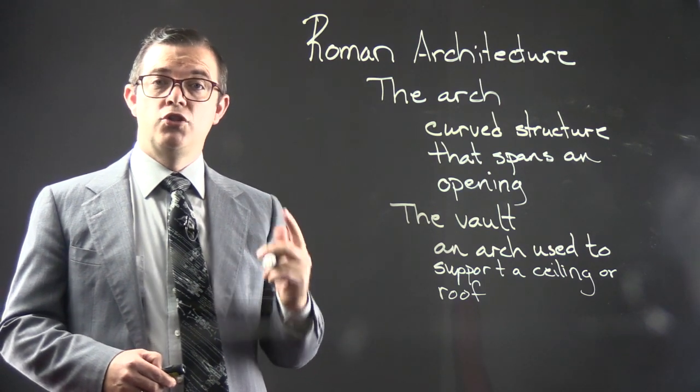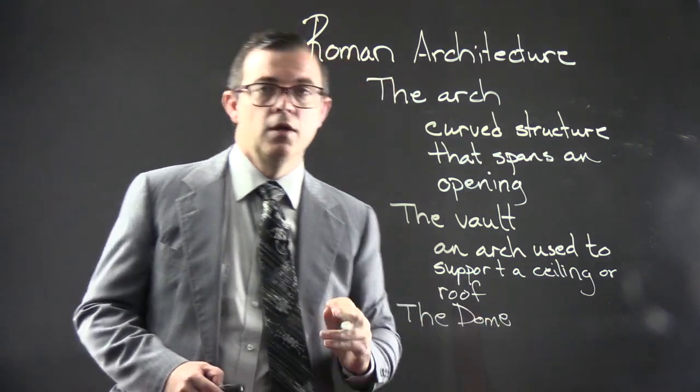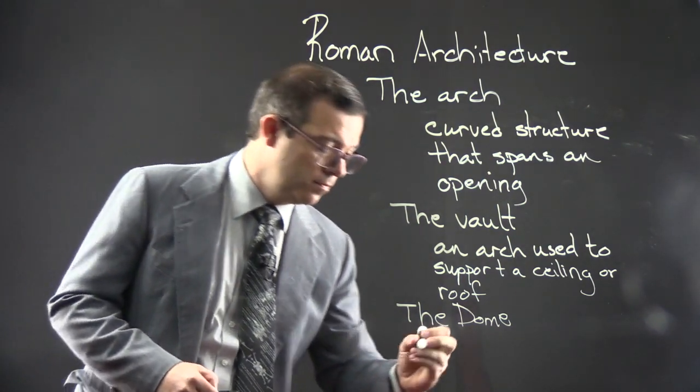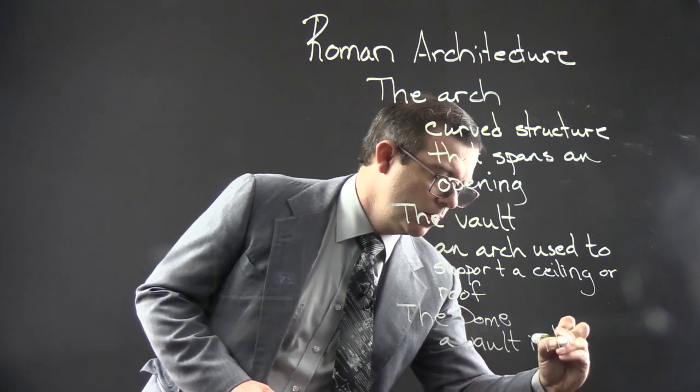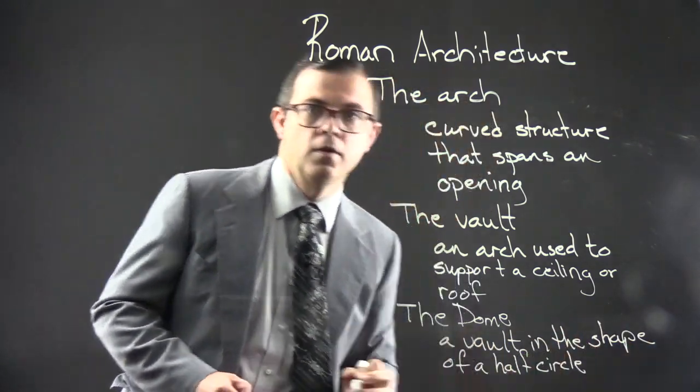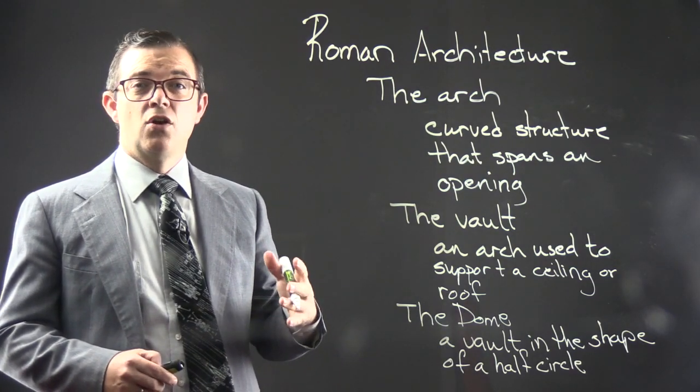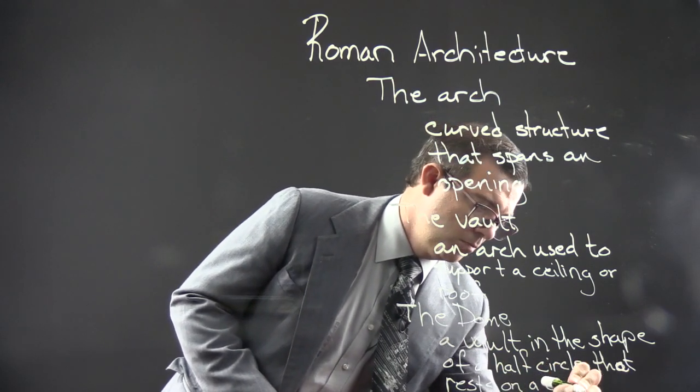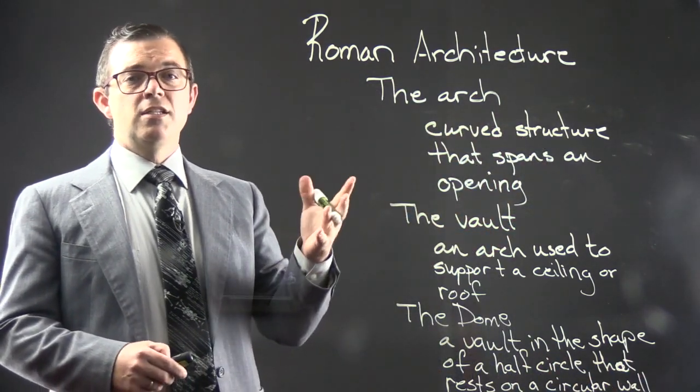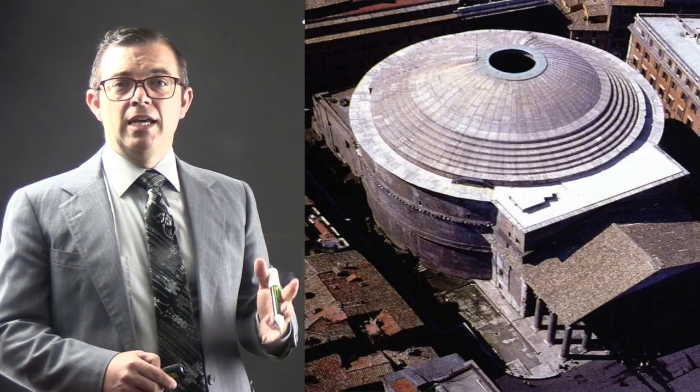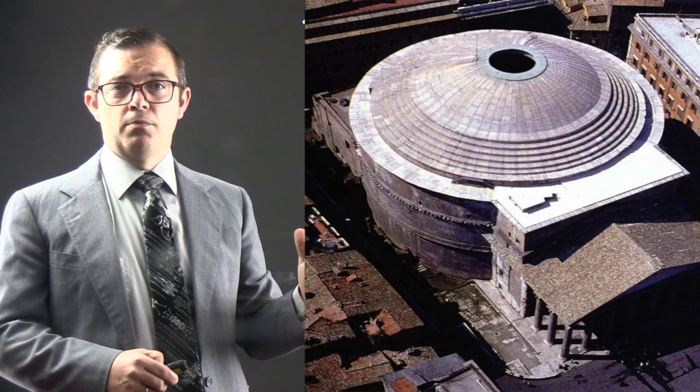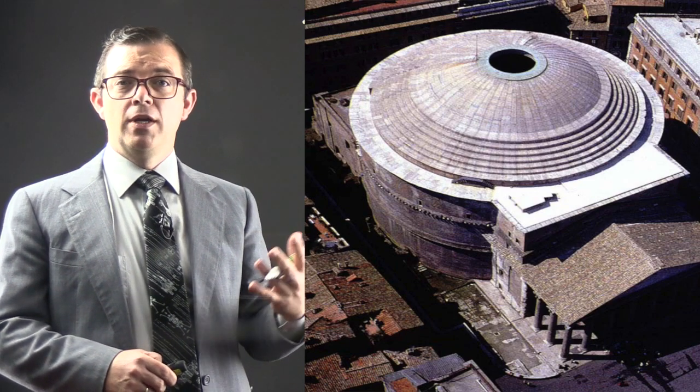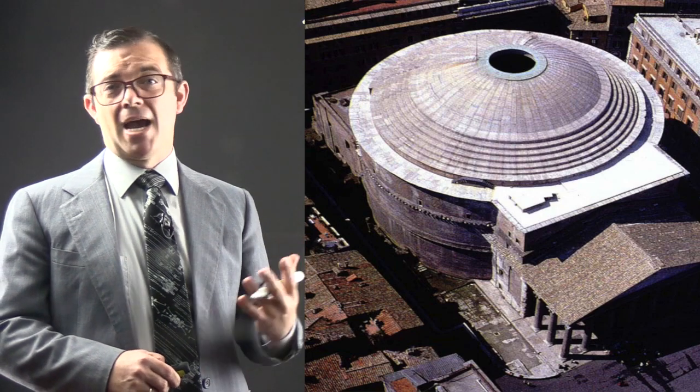Now a dome is a vault in the shape of a half circle, and it rests on a circular wall. This is an image of the Pantheon. It is famous for its huge dome. You will notice that the walls of the building are circular and that the roof is like someone cut a basketball in half.